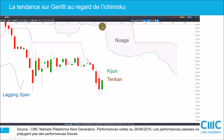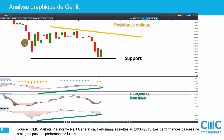L'utilisation de l'Ichimoku confirme : contrairement à tout à l'heure, on est en dessous du nuage, et la lagging span est en dessous des prix — la tendance est donc baissière. Nous avons au-dessus de nous des résistances, à savoir la Tenkan en bleu et la Kijun, et vous voyez comme ces deux courbes se combinent pour bloquer l'avancée des cours depuis cinq semaines. Graphiquement, il y a quand même deux éléments intéressants pour les haussiers.